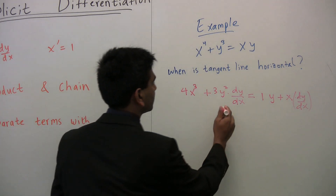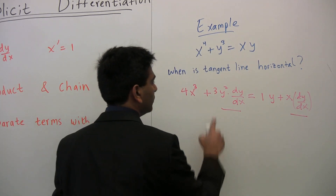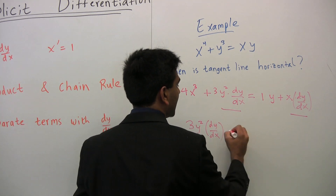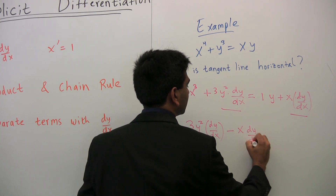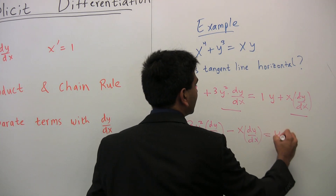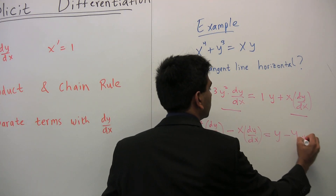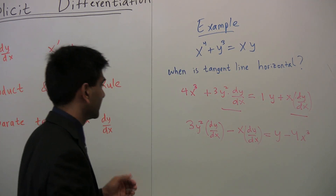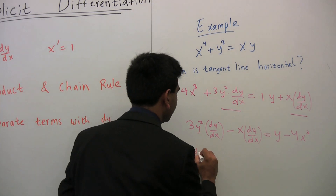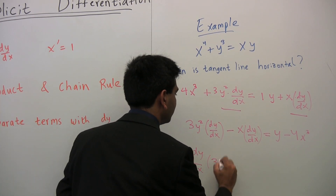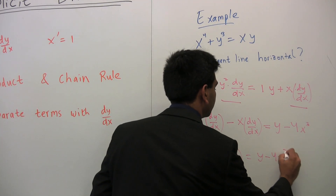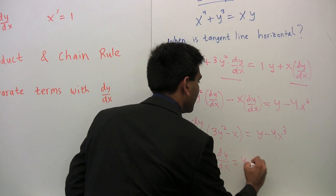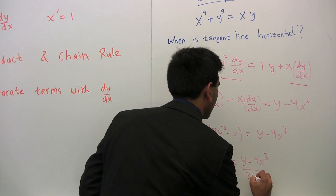Taking all the terms with dy/dx to one side gives us 3y squared dy/dx minus x dy/dx on the left. On the right, y minus 4x cubed. Factoring out dy/dx, we get dy/dx times (3y squared minus x) equals y minus 4x cubed. Dividing through, dy/dx equals (y minus 4x cubed) divided by (3y squared minus x).